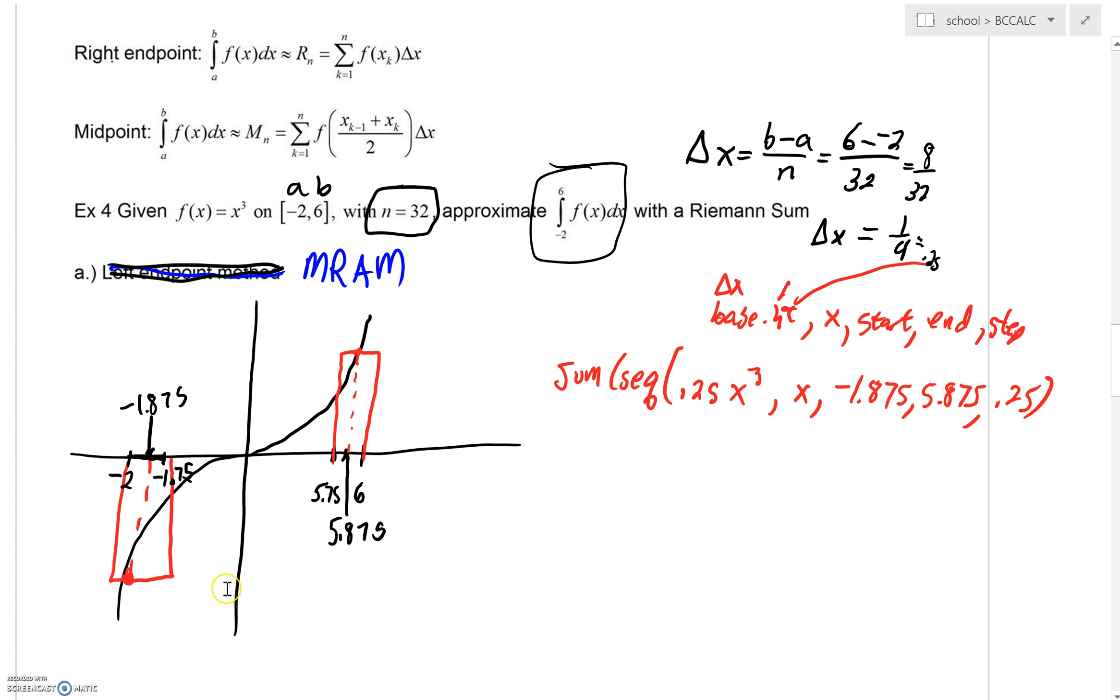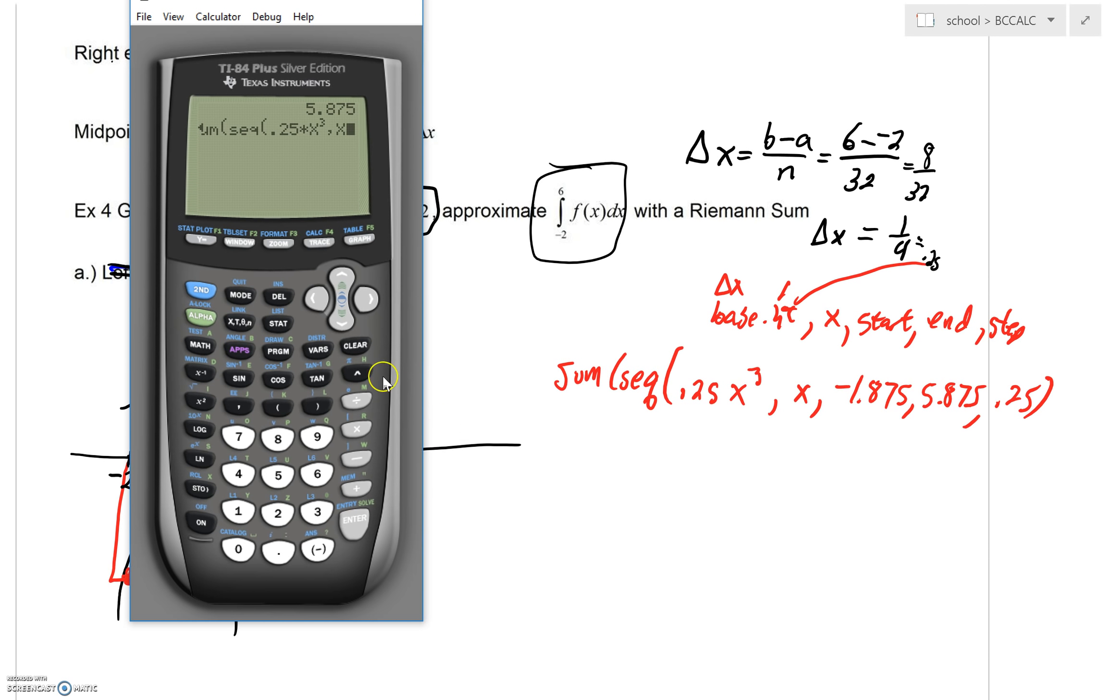Calculus BC lesson 5.2, the second part. We've set up our MRAM and we just have to get this typed out on the calculator. By the way, you could even keep hitting second enter to do that sequence.